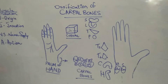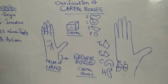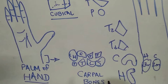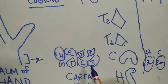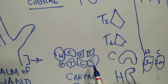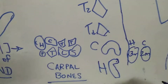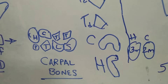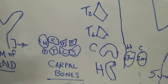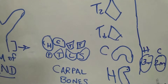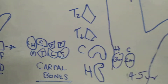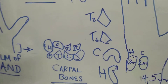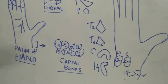The remaining bones are easy to remember if you try to see numbers within the alphabet shapes of their names. For scaphoid, you can see the number 5 — so scaphoid ossifies at 5 years. For lunate, you can see the number 4 — so lunate ossifies at 4 years.